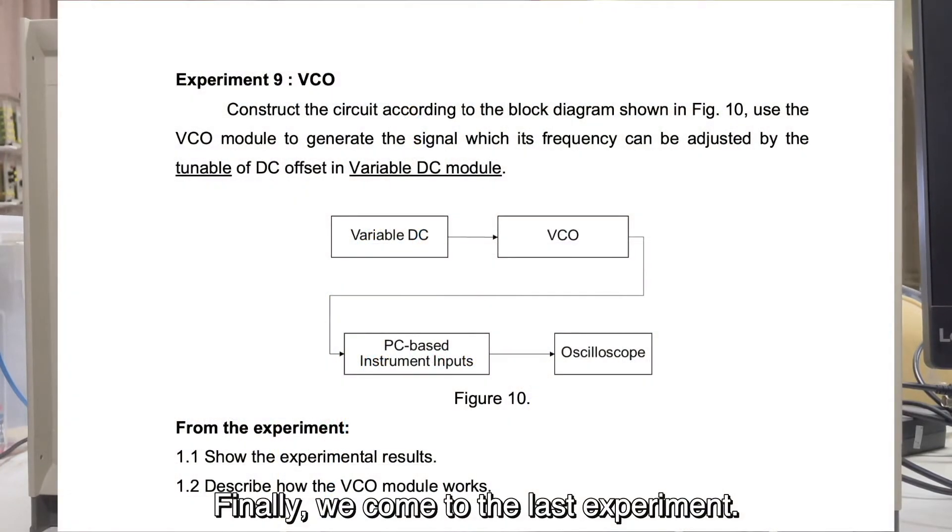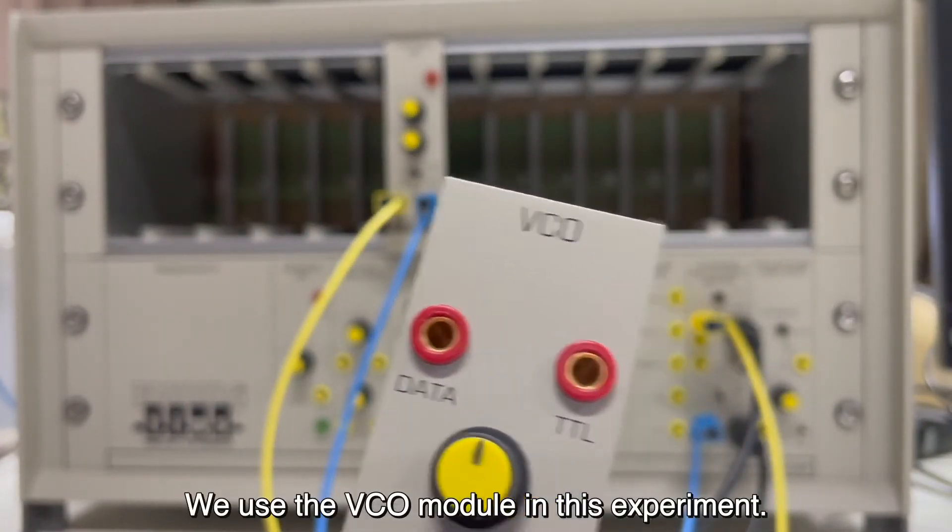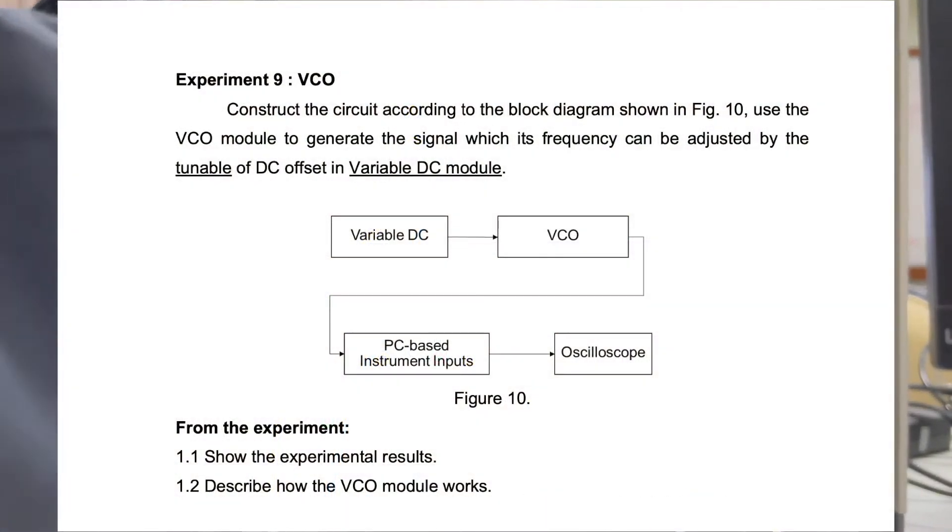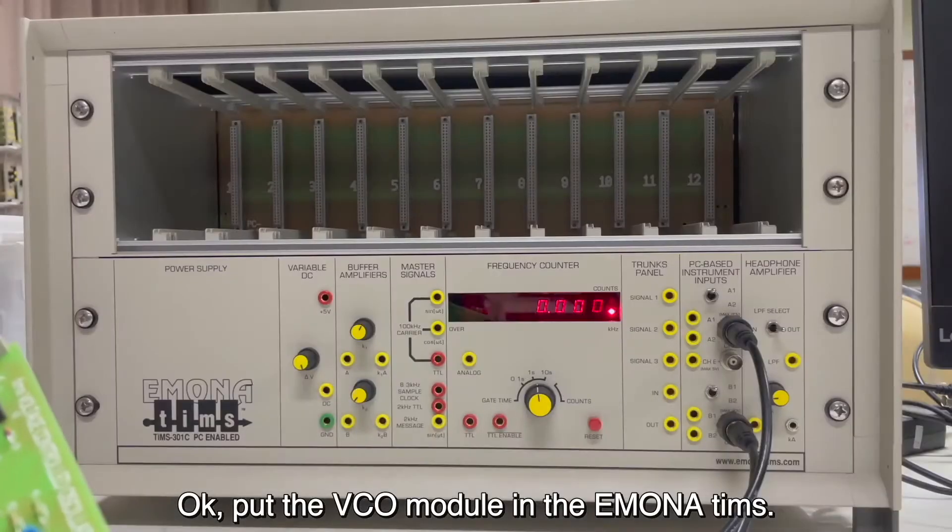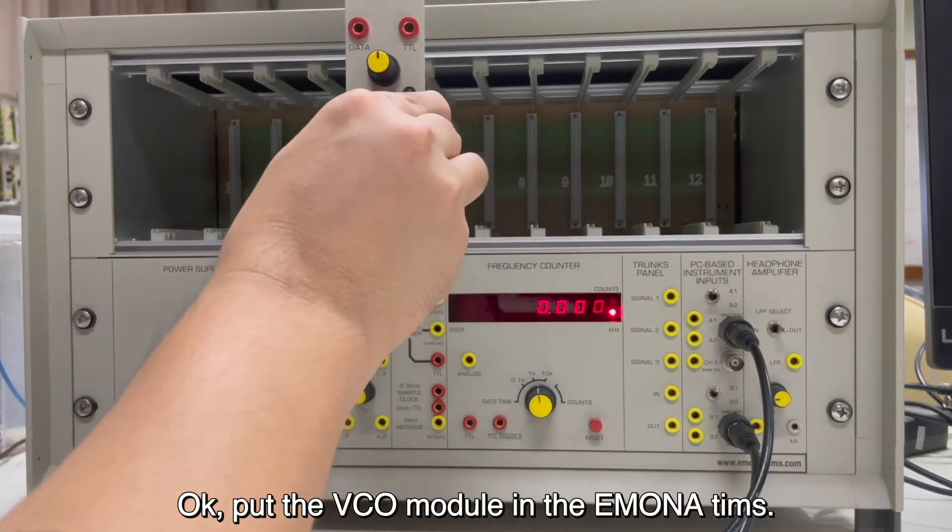Finally, we come to the last experiment. We use the VCO module in this experiment. Then, the VCO stands for the voltage controlled oscillator. Okay, put the VCO module in the EMONA TIMS.